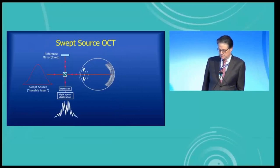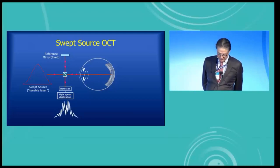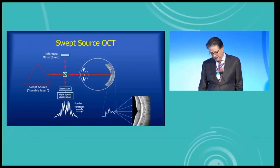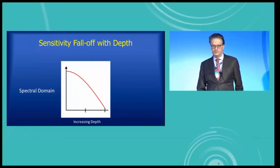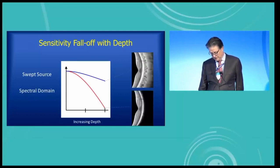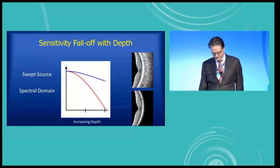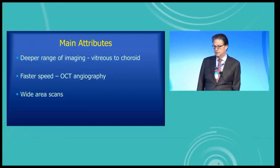Swept source OCT goes through the spectrum of wavelengths sequentially in order, and it builds up an interferogram over time. Just like spectral domain OCT, that interferogram is decoded by a Fourier transform to get an A-scan, and many A-scans make a B-scan. What's different is that the sensitivity falloff is much different than spectral domain. Swept source gives you an image all through the depth of the eye — from the vitreous, retina, and choroid — all pretty much simultaneously. The main attributes of swept source OCT are deeper range of imaging, higher speed — which is really an attribute for OCT angiography — and it also lets us do wide area scans or big volumes.